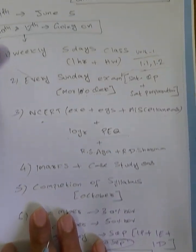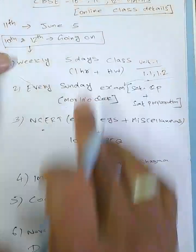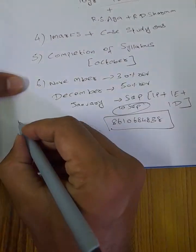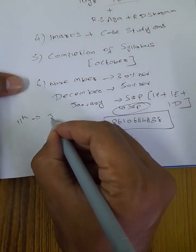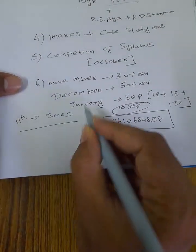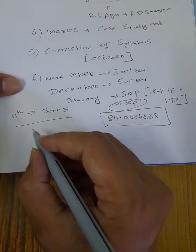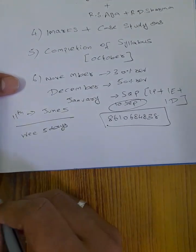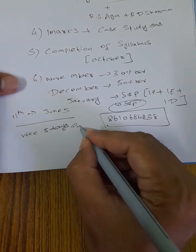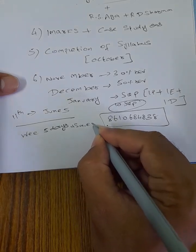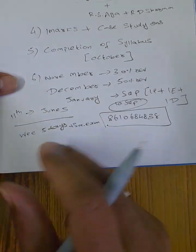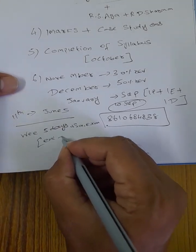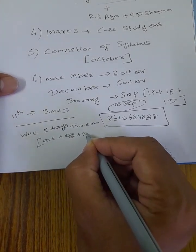This is for 10th and 12th. The 10th starts June 5th. The same concept — the 11th is also June 5th class. The same schedule for the 11th class. Weekly classes are 5 days class, and on Sunday there is an exam. The next focus is NCERT exercises, examples, and miscellaneous — all of these things are important.